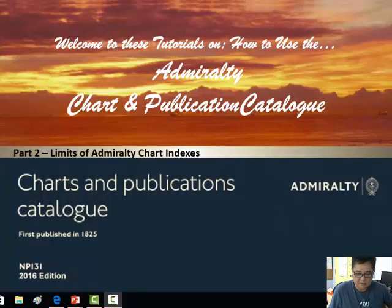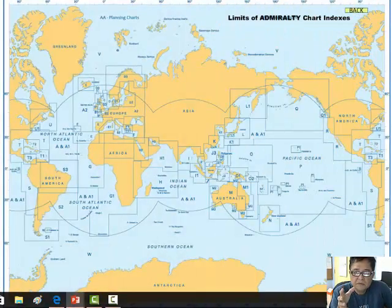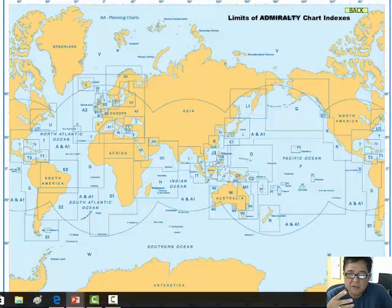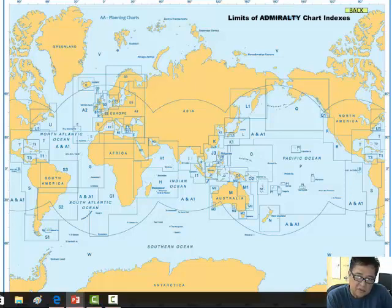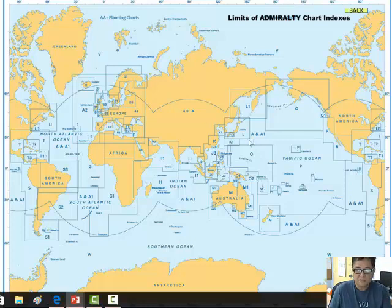This picture shows the image of the limits of admiralty chart indexes. It's a big map of the world which is divided into blocks called indexes, and the limits of the blocks are the limits of the chart where the chart boundary can be found. We will make it bigger for you.